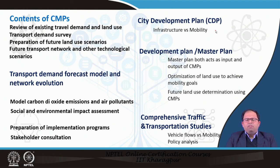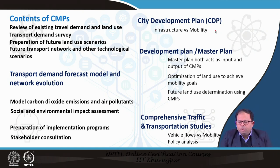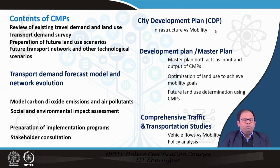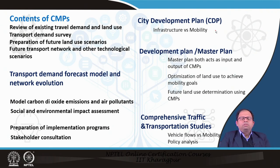A CMP covers how it relates to existing plans. For example, with the development plan or master plan, they can act as input and output of each other. Input into a CMP could come from the master plan — for example, future land use scenarios or job growth projections. After running transport demand models and optimizing land use to achieve mobility goals, we can give this input back to the master plan so it could be improved. Future land use determination using CMPs can also be part of the development plan.